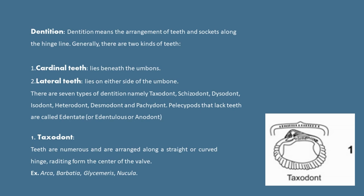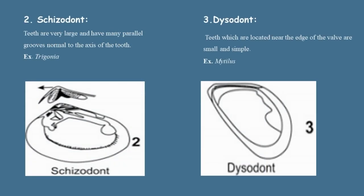The first type is Taxodont. Teeth are numerous and are arranged along a straight or curved hinge, radiating from the center of the valve. Examples are Arca and Glycymeris. The next type is Isodont — teeth are very large and have many parallel grooves normal to the axis of the tooth. An example is Trigonia.